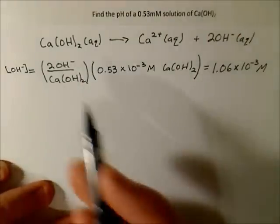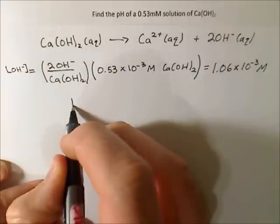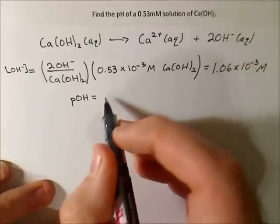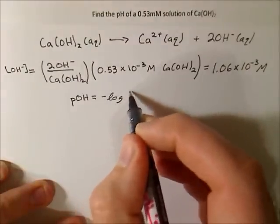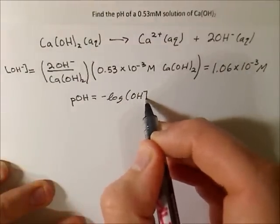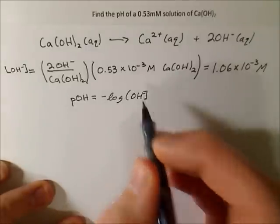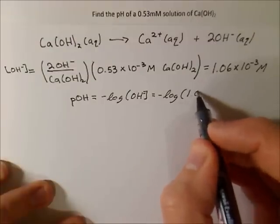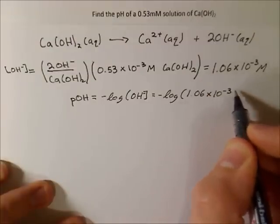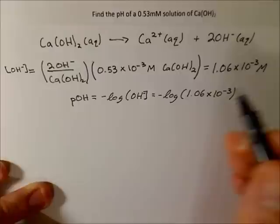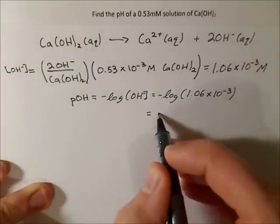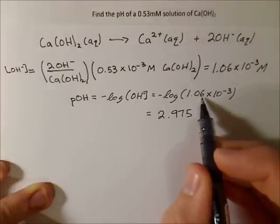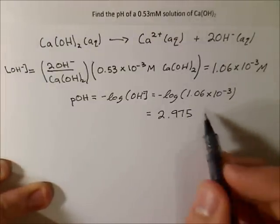And that's exactly what we need to find the pOH. So the pOH is just like the pH except it's the negative log of the concentration of OH-. And after that, we should get 2.975, three significant figures there, three significant figures there. So that checks out.